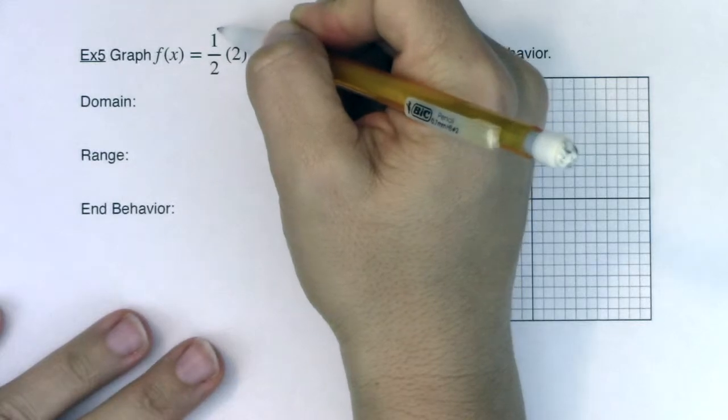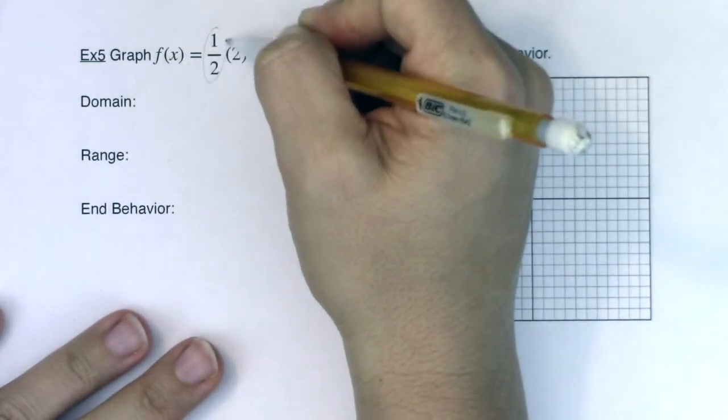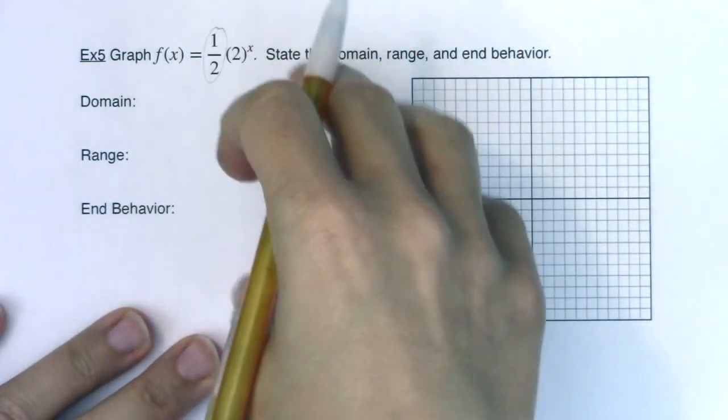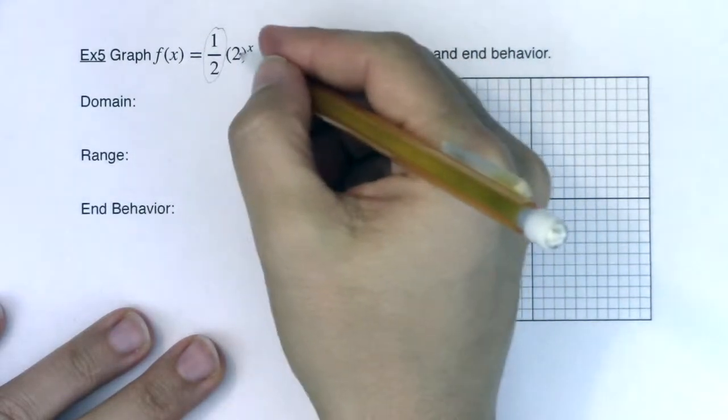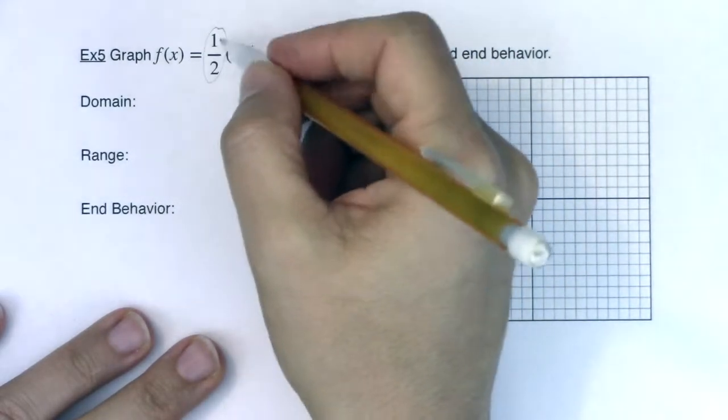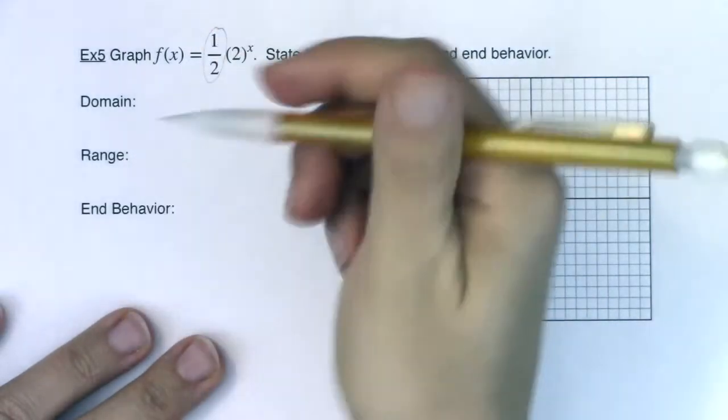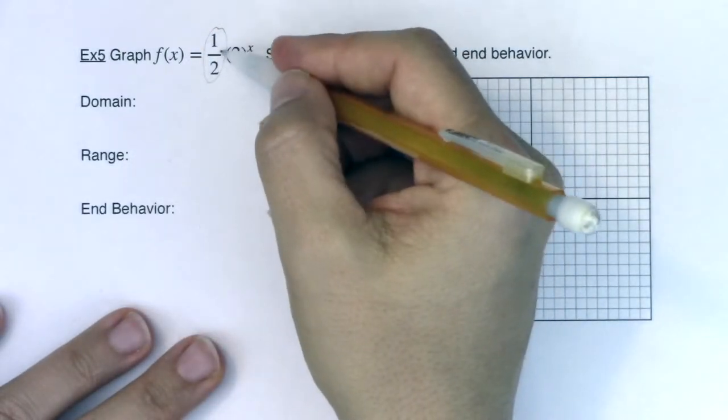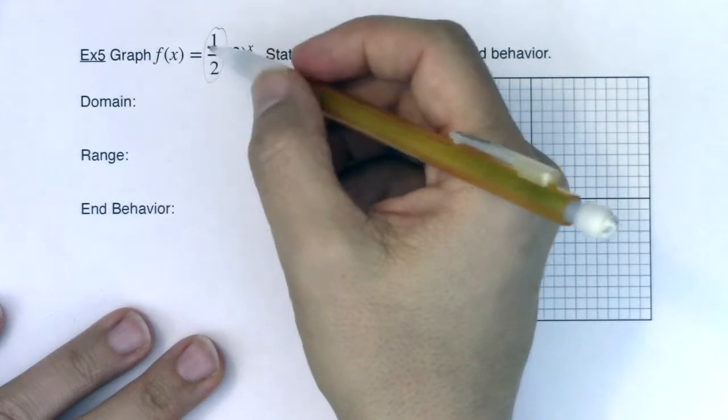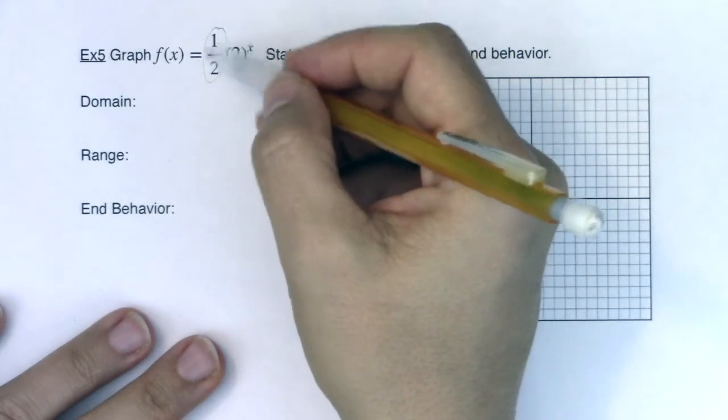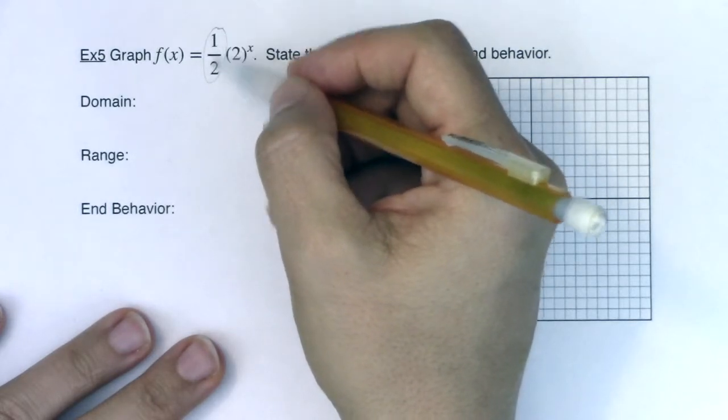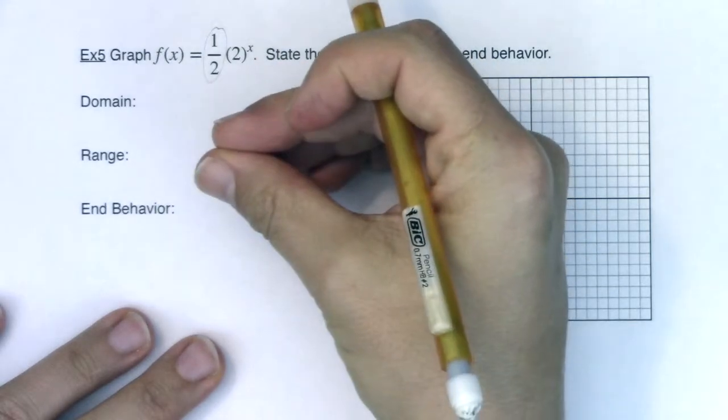If you remember from way back in section 3.5, when you multiply by a constant out in front of the function, out in front of 2 to the x, then you're going to stretch or shrink your y values. In this case, we're going to shrink our y values because this is a fraction. Anytime you have a number between 0 and 1, you're going to shrink your y values.